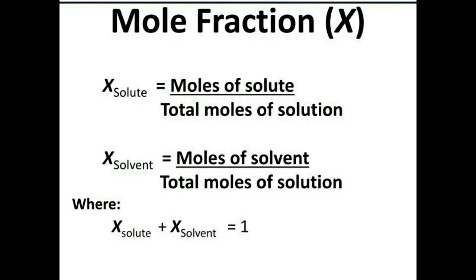Suppose we have two components A and B, with one mole of A and three moles of B. The total number of moles is 3 plus 1, which equals 4. So the mole fraction of A — zeta of A — equals the number of moles of A divided by the total number of moles, that is moles of A plus moles of B.